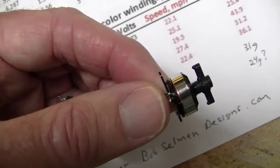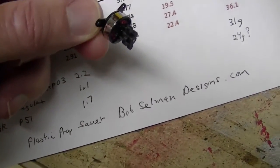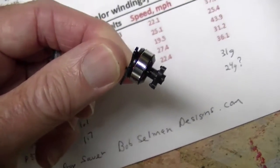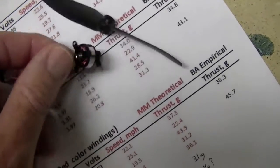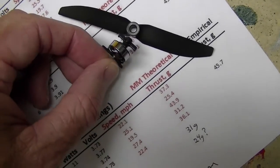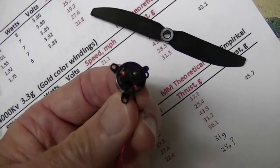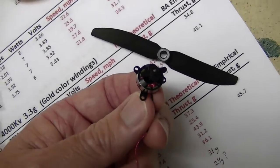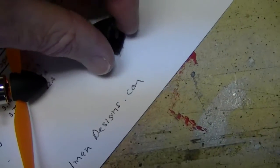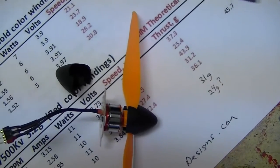This is a plastic prop saver from BobSellmanDesigns.com that will fit these GWS props that have the bigger hole. Pushes on to a 1.5 millimeter shaft. And here's some prop adapters from GWS that can be ordered from BP Hobbies.